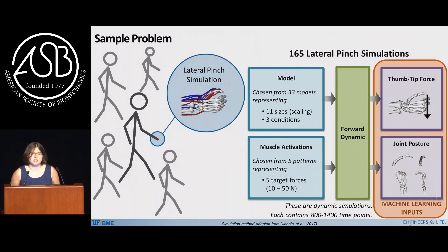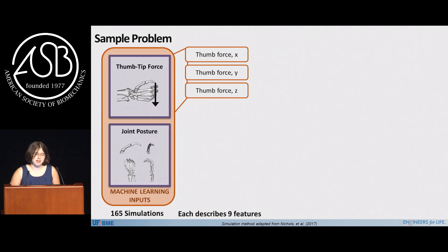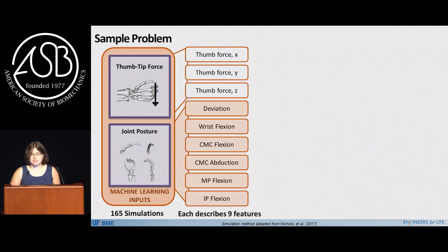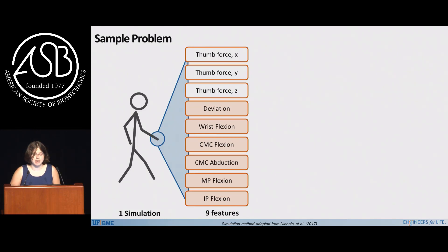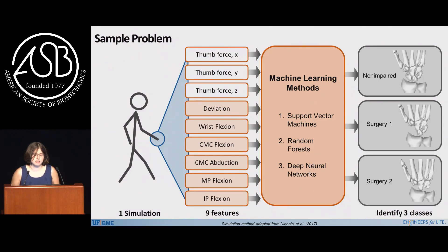The thumb force and joint posture are what go into our machine learning — they're called features. When you start working with collaborators, you have to start learning each other's language. We've been working on this project for about nine months, and I think we finally defined the term 'parameter' in the same way. So we have 165 simulations, a three-dimensional force vector, and joint angles describing six degrees of freedom. The machine learning algorithm is supposed to take data from one simulation — like taking one random person — and figure out which of three categories, or classes, it falls into. We did three different kinds of machine learning: support vector machines, random forests, and deep neural networks.